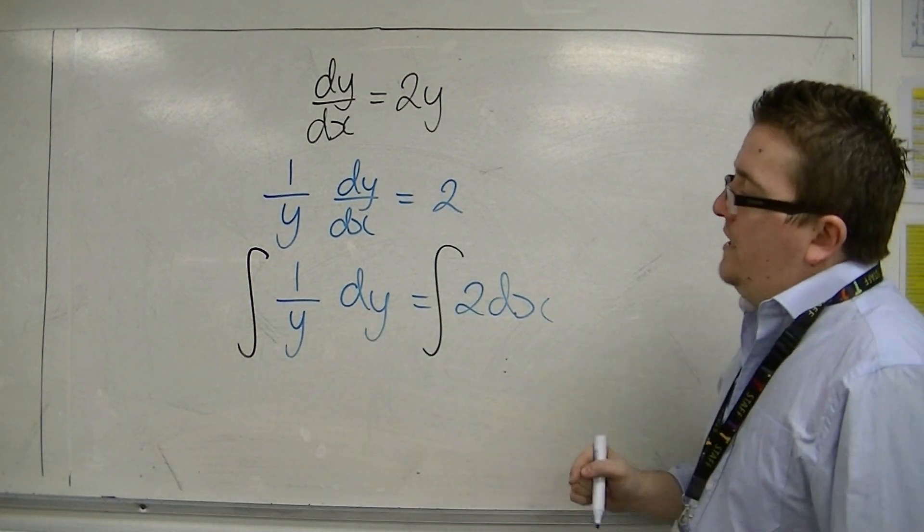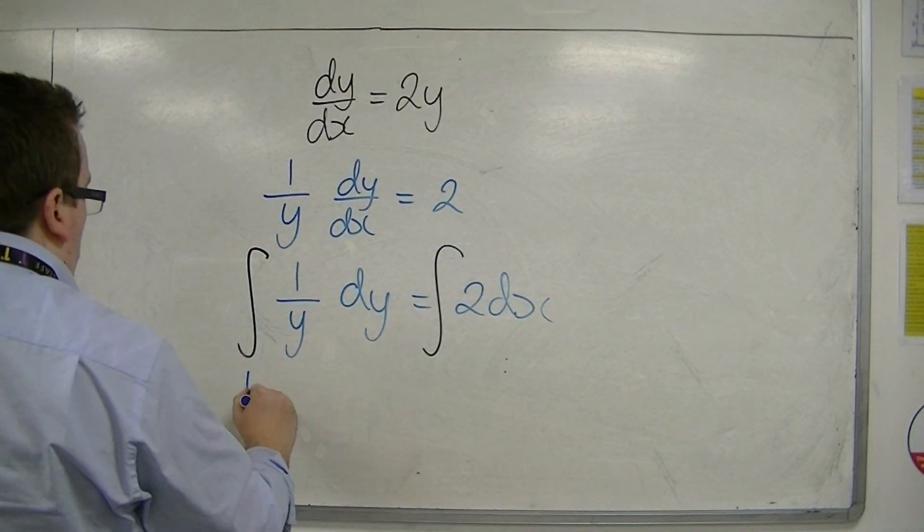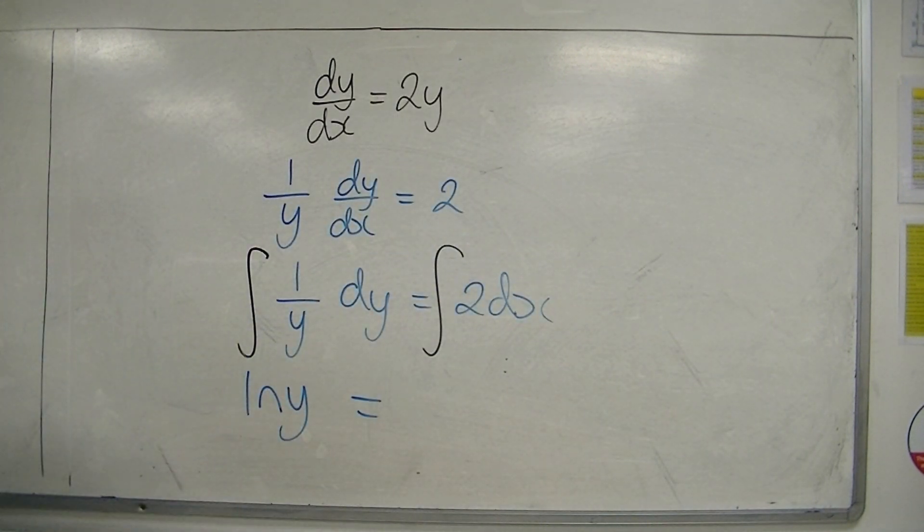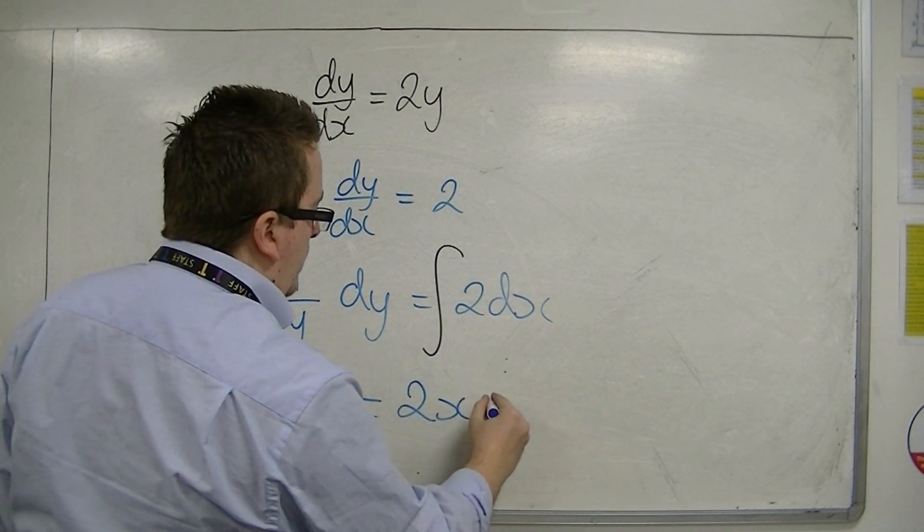Now, I have 1 over y dy. Now, that integrates to log y, ln y. And the right-hand side of the equation integrates to 2x plus c.